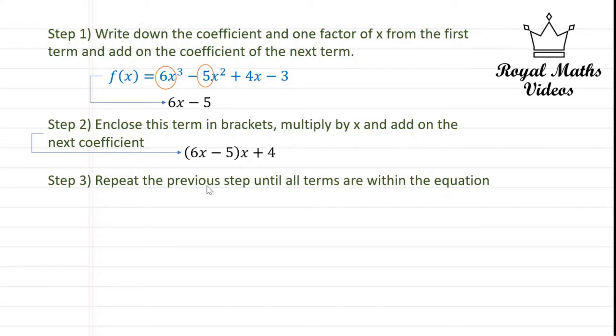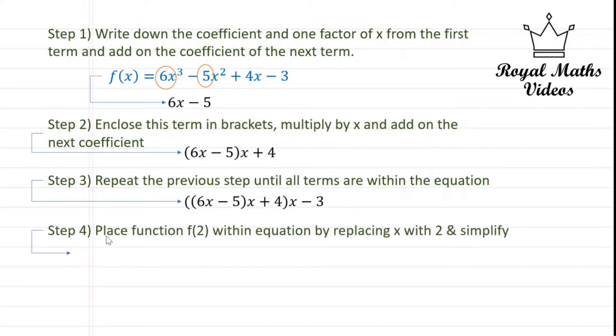Step 3 would be to repeat the previous step until all terms are within the equation. Again, we put this whole expression in brackets, multiply it by x, and then add on the next coefficient, which is -3, as seen over here.